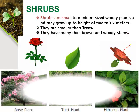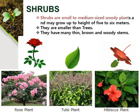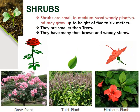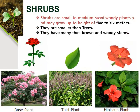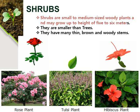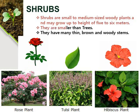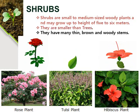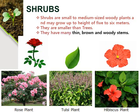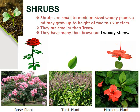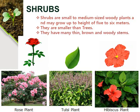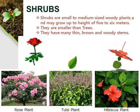Shrubs: Some plants are small and have woody stems. Such plants are called shrubs. Examples are rose plant, tulsi plant and hibiscus plant.